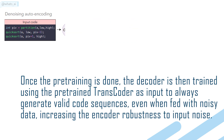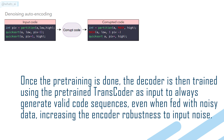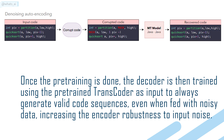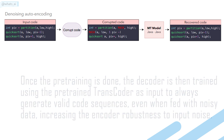Once the pre-training is done, the decoder is then trained using the pre-trained Transcoder as input to always generate valid code sequences, even when fed with noisy data, increasing the encoder robustness to input noise.